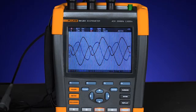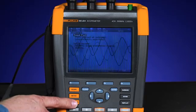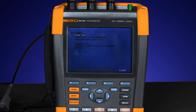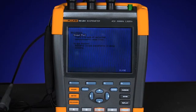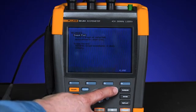In order to capture a random event, we'll use the function called recorder mode. In trend plot mode, you could capture or record events from as little as milliseconds up to 22 days.